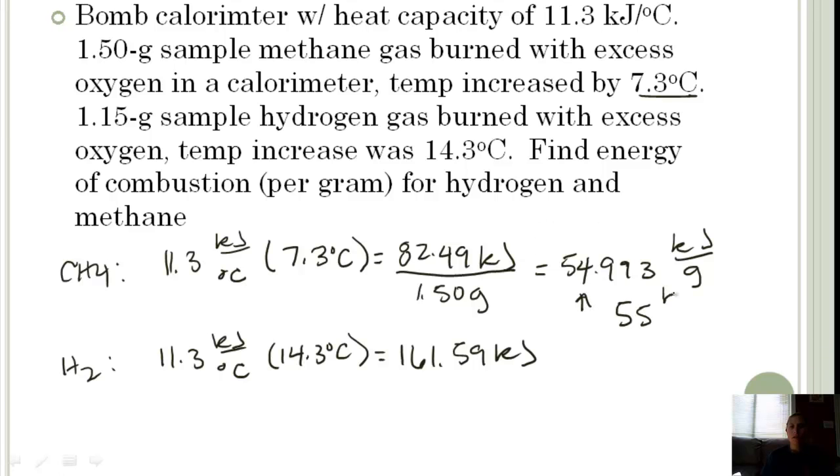Let's do the same thing for the hydrogen. I know my mass for hydrogen was 1.15 grams. If I divide these, it gives me 140.5. Two significant figures makes it 140 kilojoules per gram.